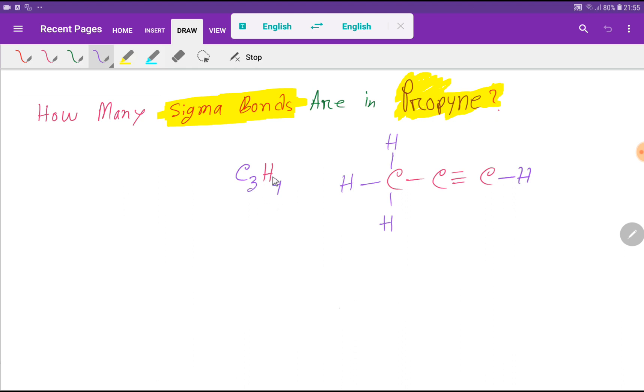Look at here. From this molecular formula we can easily find out the number of sigma bonds. For finding the number of sigma bonds, the number of sigma bonds equals total number of carbon minus 1 plus other atoms.